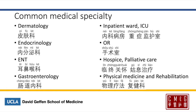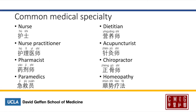So for hospice, 临终关怀 — 临 meaning near, and 终 meaning the end. Physical medicine and rehabilitation, PM&R, will be 康复科. To describe physical therapy, 物理疗法. Nurse will be called 护士. And nurse practitioner, 护理医师. Pharmacist will be 药剂师. And paramedics, 急救员. Dietitian, 营养师 — 营养 meaning nutrition. Acupuncturist, 针灸师. And chiropractor, 正骨师.